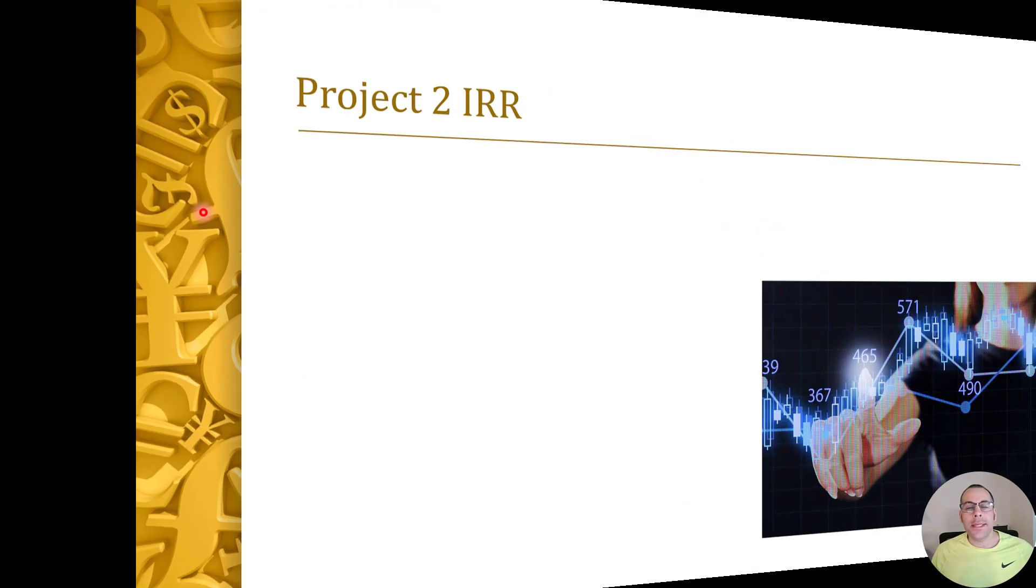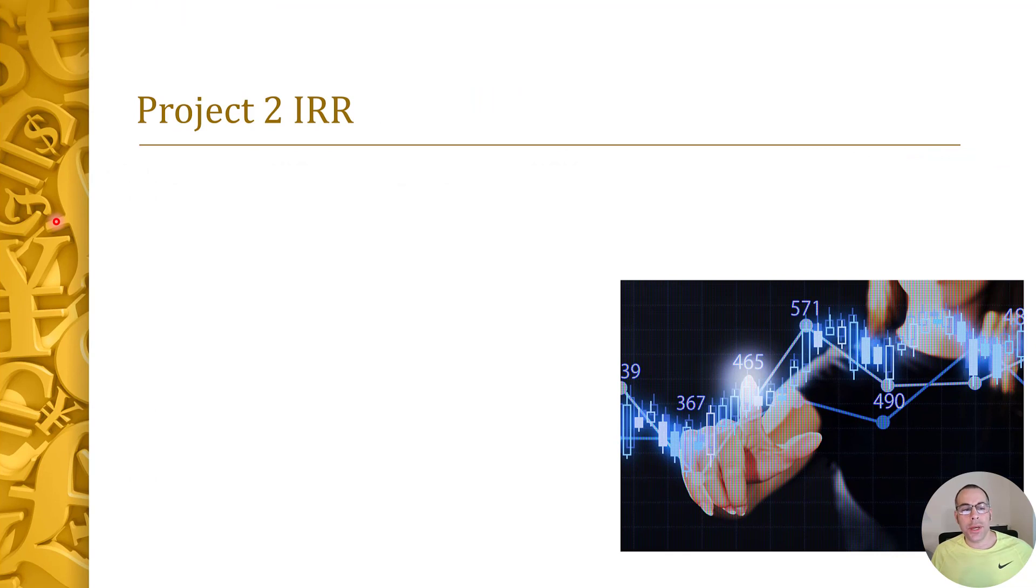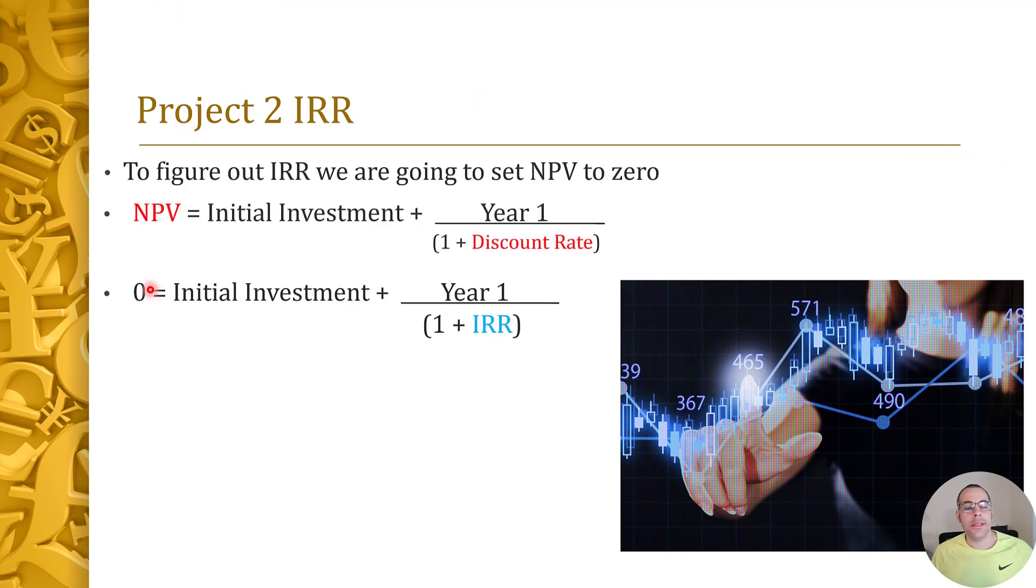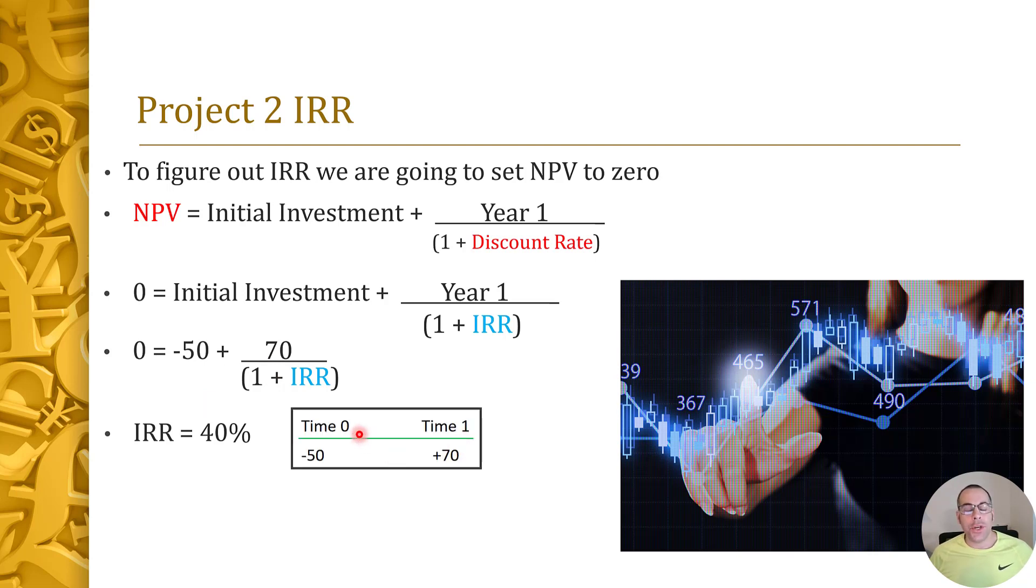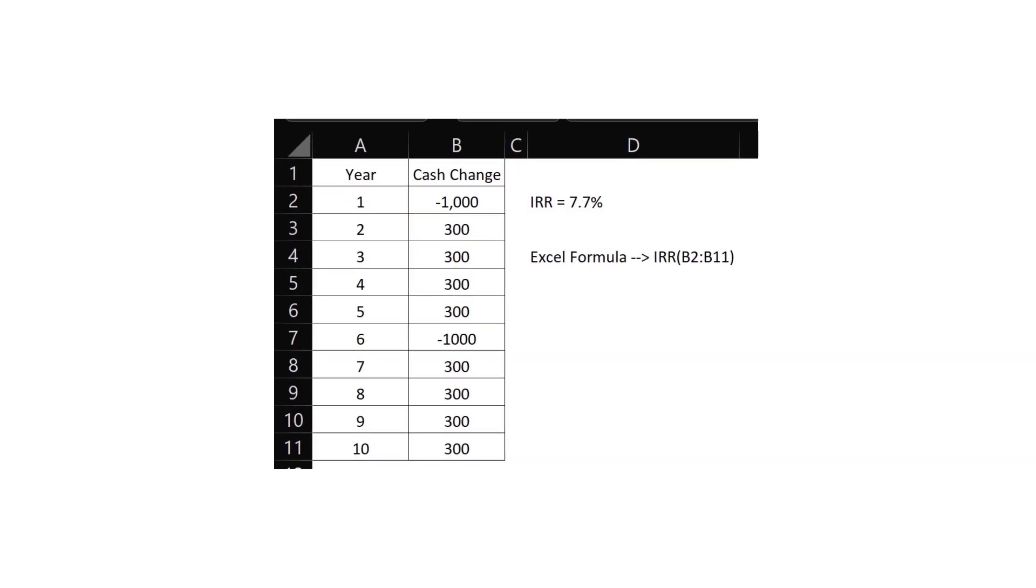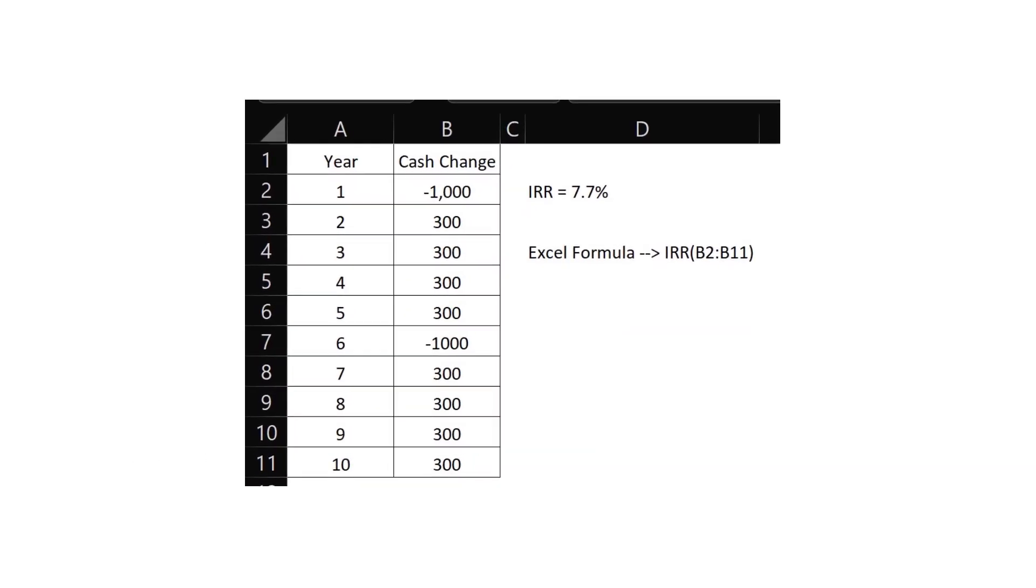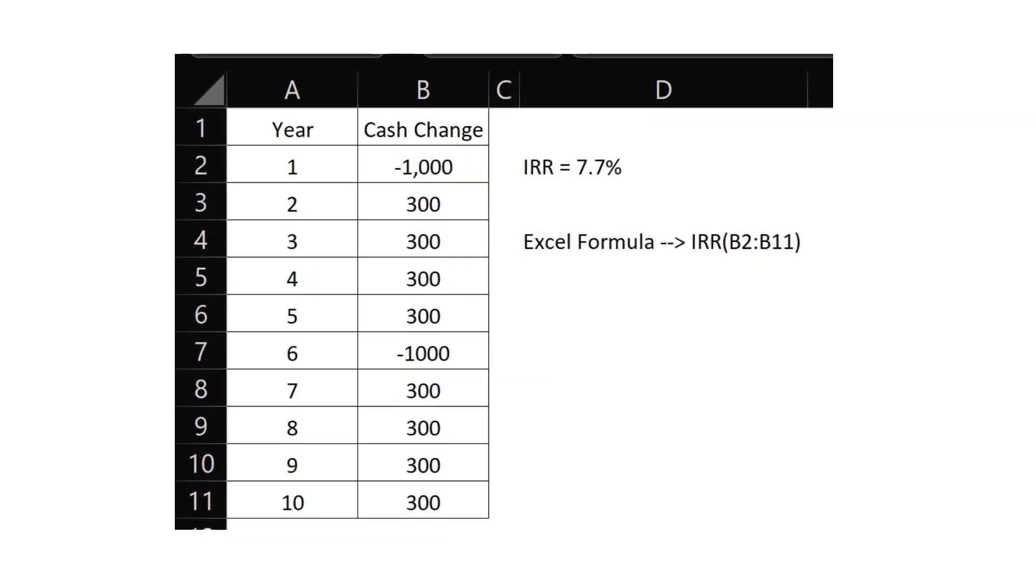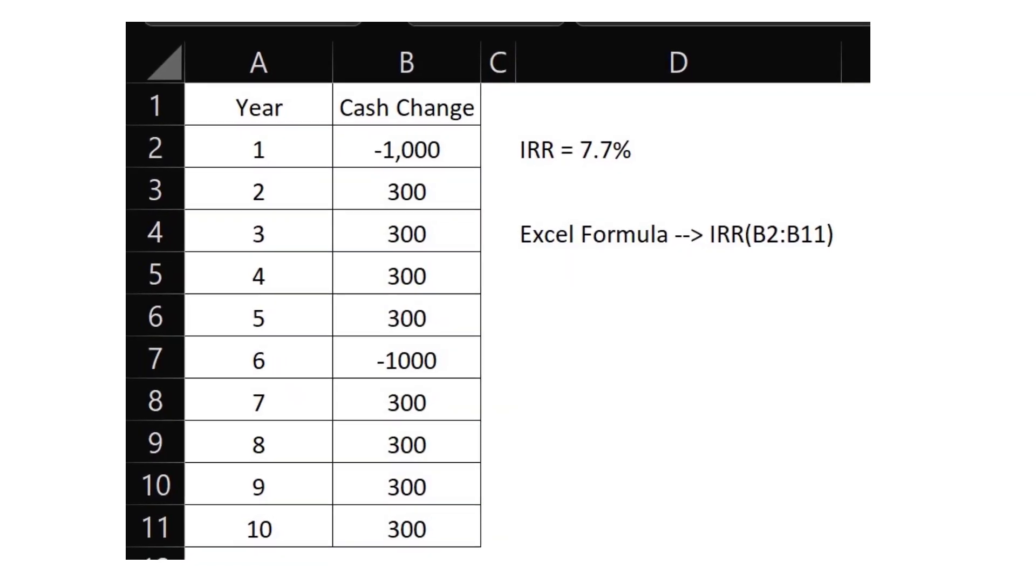Let's calculate the internal rate of return for the second project. We have to set NPV to zero. Here's the formula with the unknown of IRR. We plug in our known variables: zero equals negative 50 plus 70 over 1 plus internal rate of return. If we do a little algebra, the IRR is 40 percent. In this second project, we invested $50 and received a 40% return; we received $70 after one year. You could think of the internal rate of return as the rate of growth you expect to receive annually. We can look at a 10-year project with a lot of cash inflows and outflows; we would still get an annual IRR, so it's pretty similar to CAGR, compound annual growth rate.